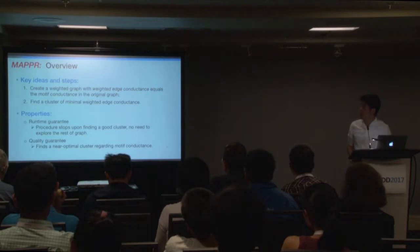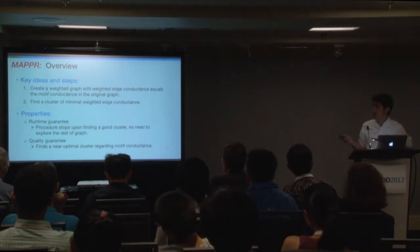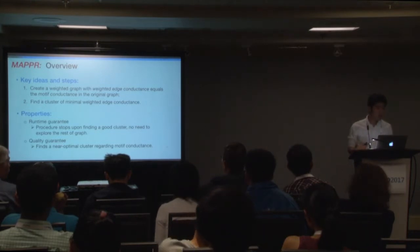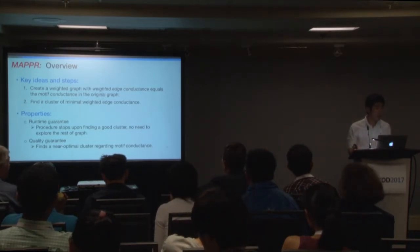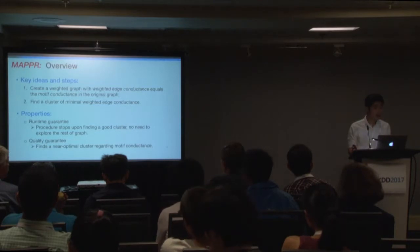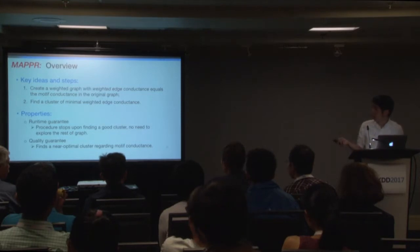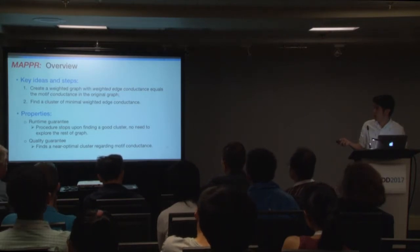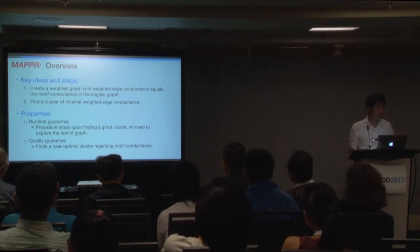Our algorithm has a few very nice properties. First, it has a runtime guarantee, which means the procedure will stop upon finding a very good cluster without needing to explore the entire network. And second, our method also has a quality guarantee, which ensures it will find a near-optimal cluster in terms of motif conductance.